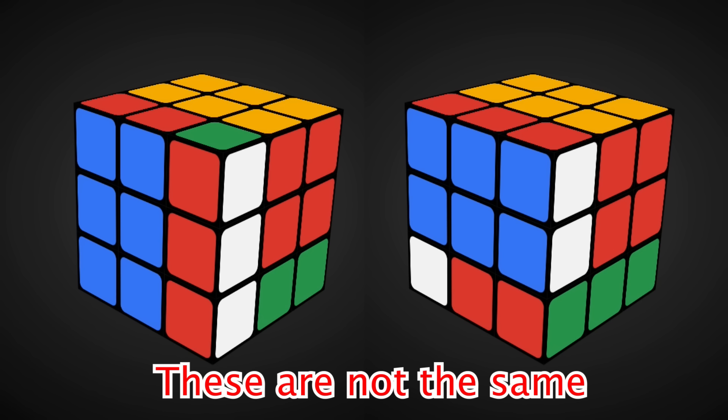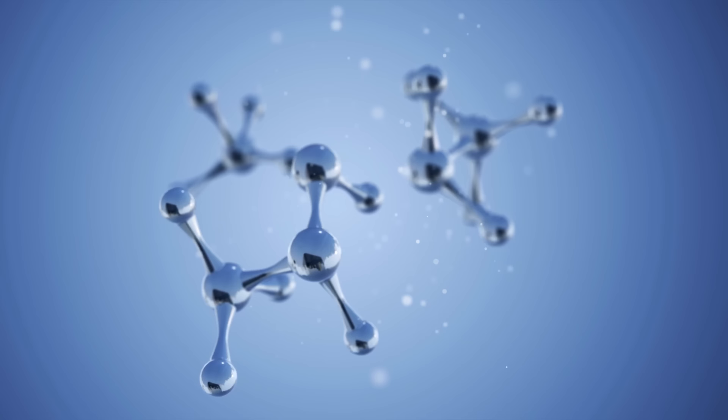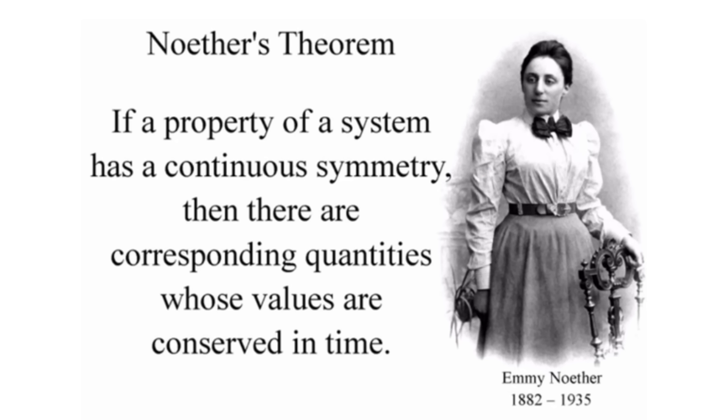This mathematics of symmetry has applications in chemistry, for example, as groups can classify certain crystal structures and symmetries within molecules. It can apply to public-key cryptography, and it has various applications in physics. For example, Noether's theorem explains how symmetry within a system corresponds to a conservation law. And this gave us a better understanding of Einstein's general theory of relativity.